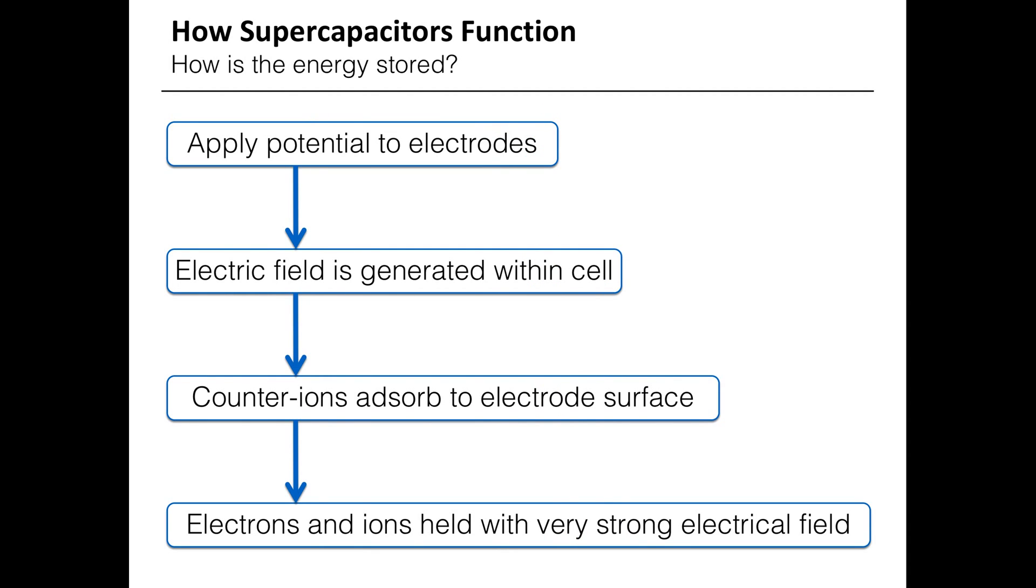So, to recap, we apply potential to the electrodes. An electric field is generated within the cell. The counter ions adsorb to the electrode surface. And the electrons and ions are subsequently held in an intense electric field, which stores the energy which we are putting into the cell.